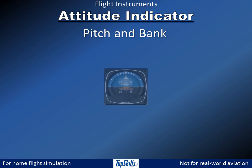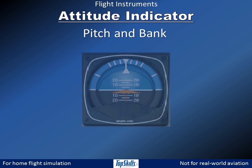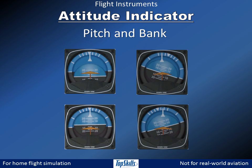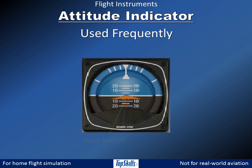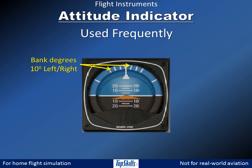The attitude indicator shows the aircraft's pitch and bank by tilting up, down, left, and right as the aircraft pitches and banks. The symbol in the middle represents your aircraft. Pitch marks are usually in increments of 5 degrees up and down. Bank marks are usually in increments of 10 degrees left and right.